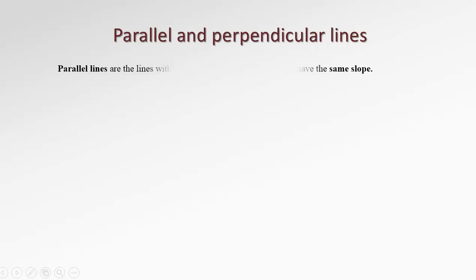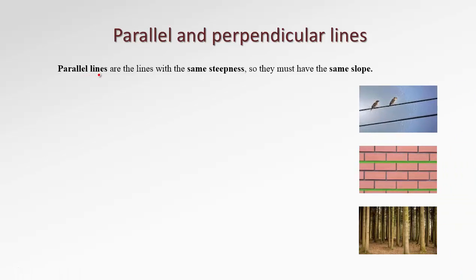In this video we will talk about parallel and perpendicular lines. Parallel lines are lines with the same steepness, so they must have the same slope. For example, like these two wires, they are slanted with the same steepness. Or the parallel layers of brick in a wall. Or even in the woods, those are parallel vertical lines.